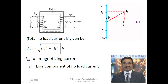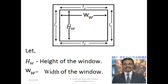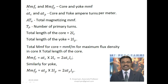First, we need to understand the transformer dimensions. This section is called the core and these sections are called the yoke. LC is the length of the core, LY is the length of the yoke. This body is called the window. WW is the width of the window and HW is the height of the window. The MMF required for the core is denoted as MMF_C, and MMF_Y is the MMF required for the yoke. ATC is the core ampere-turns per meter, and ATY is the yoke ampere-turns per meter.